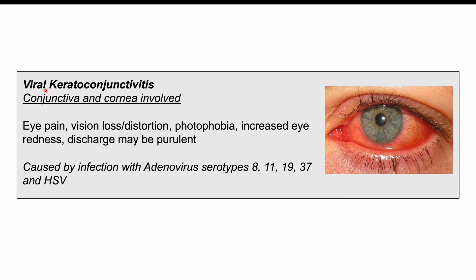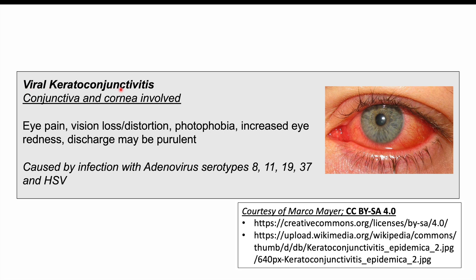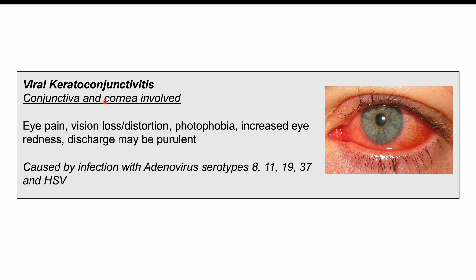A more severe form is viral keratoconjunctivitis, where both the conjunctiva and the cornea are involved. Once the cornea is involved, additional signs and symptoms can occur including eye pain, vision loss or distortion, and photophobia. There is increased eye redness and greater inflammation, and the discharge may become purulent. Viral keratoconjunctivitis carries potential for vision loss and is caused by adenovirus serotypes 8, 11, 19, and 37, as well as herpes simplex virus.